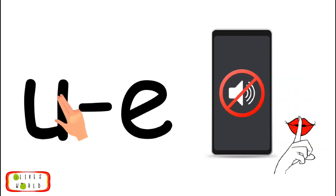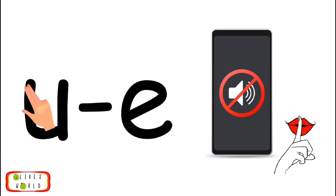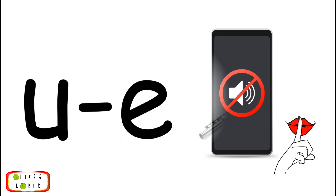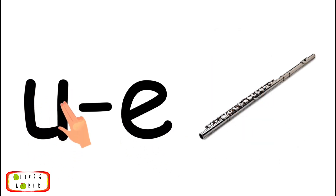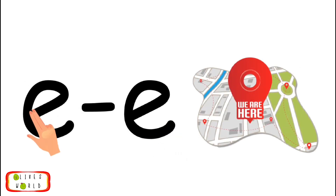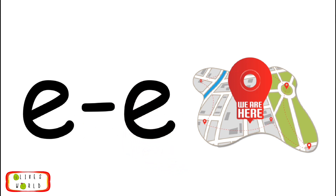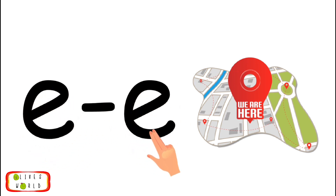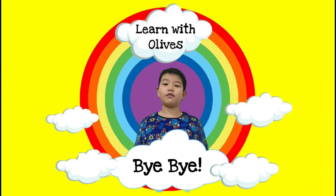U, Consonant E, mute, U. Repeat U, Consonant E, mute, U. U, Consonant E, flute, U. Repeat U, Consonant E, flute, U. E, Consonant E, hear, E. Repeat E, Consonant E, hear, E. Bye guys, and thank you for watching.